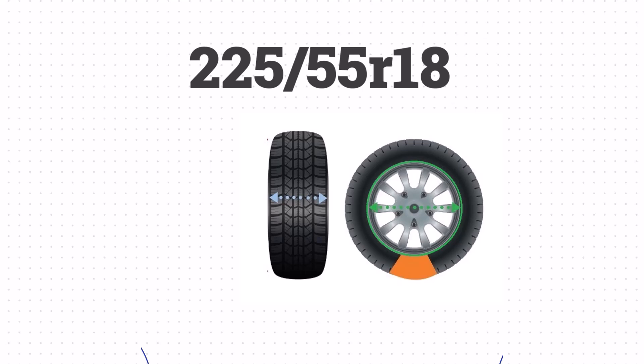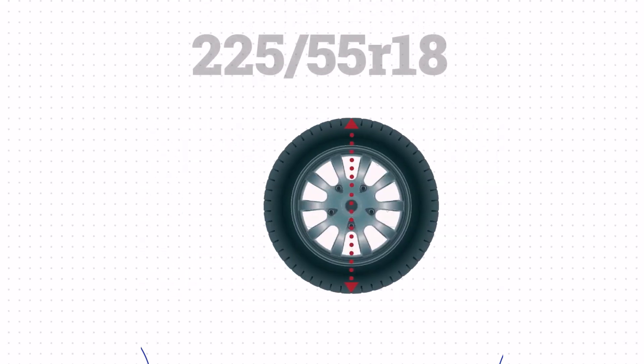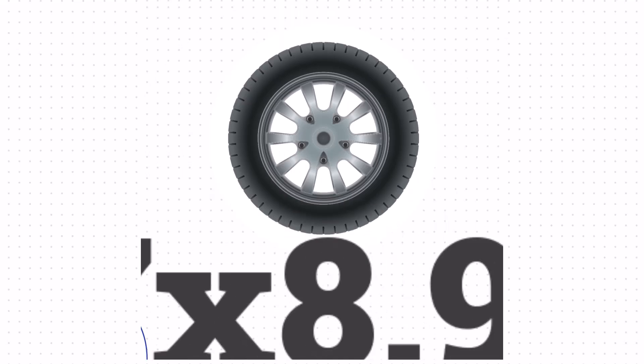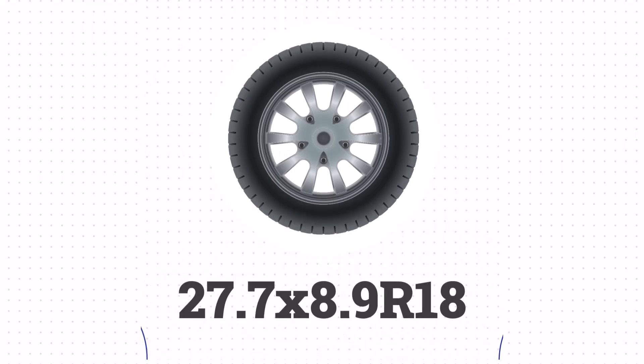To calculate the height, we'll take the sidewall size, add the wheel size, and then add the sidewall size one more time. This gives us a total tire height of 27.7 inches. Lastly, the size 225/55R18 is equivalent to 27.7 x 8.9 R18 in inches.